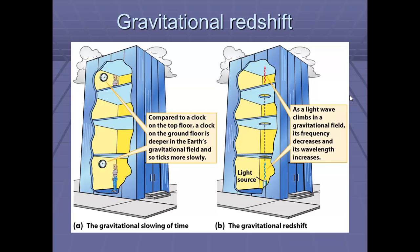At the same time, if we have a light source which is emitting light from the bottom of the tower, now what happens as the light climbs in the gravitational field, its frequency decreases and its wavelength increases.